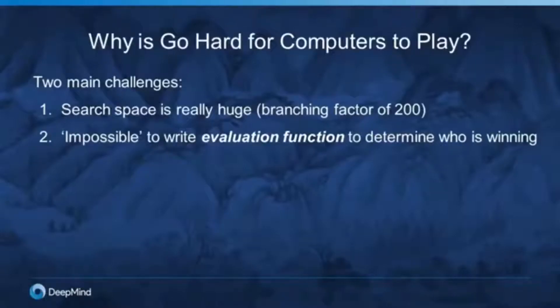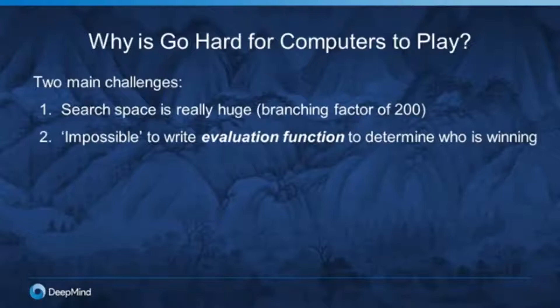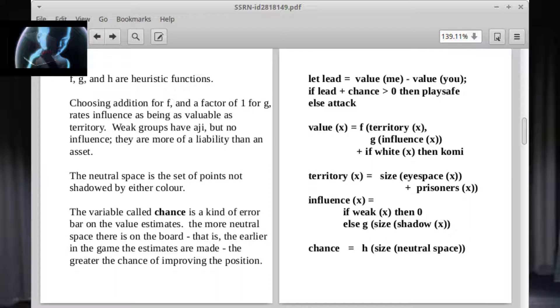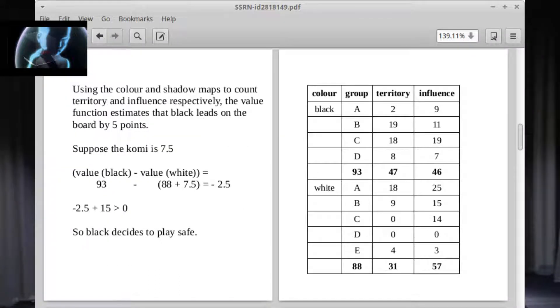Actually harder than the sheer number of possibilities is that until AlphaGo came along, it was thought to be impossible to directly write what's called an evaluation function — to tell the system whether black or white was winning and by how much. All the pieces are the same, and even a small change in the position of one piece can totally change the outlook of the position. Each piece has huge influence depending on exactly where it is.